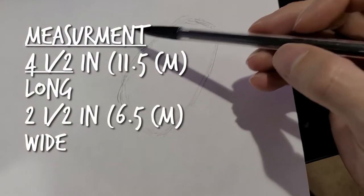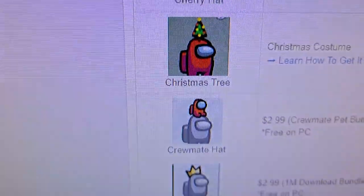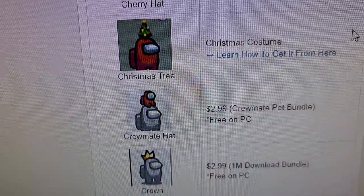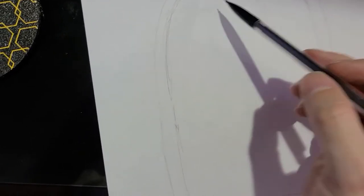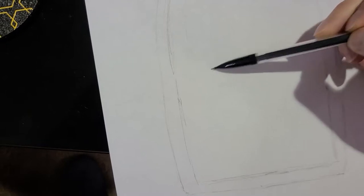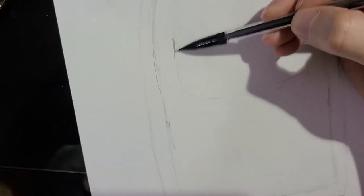And then again giving yourself that outside sewing area, so that the final product is the size that you want. Then you're gonna reference what a crewmate hat looks like on Among Us. You're gonna trace out the face shield on your body that you had traced out, getting those outlines in there so that you can then trace it on another piece of paper.